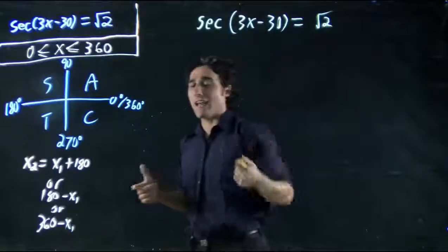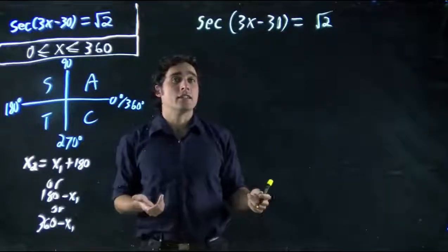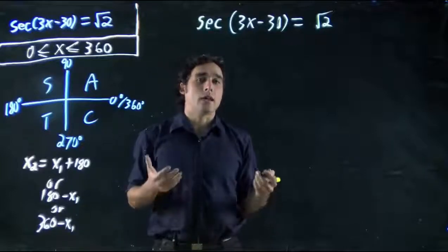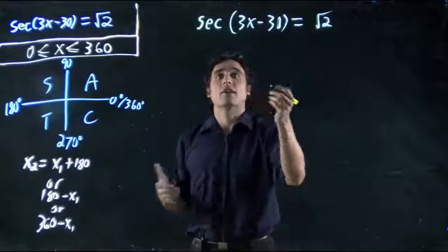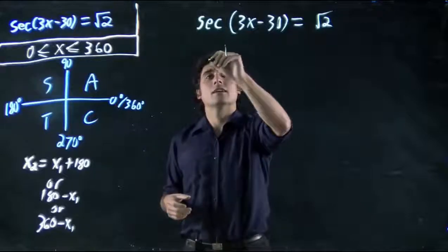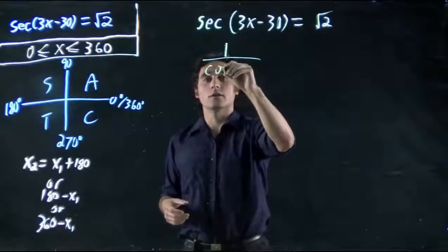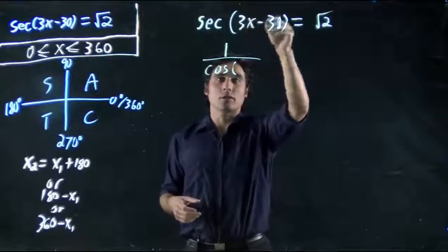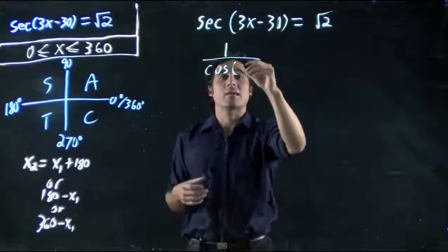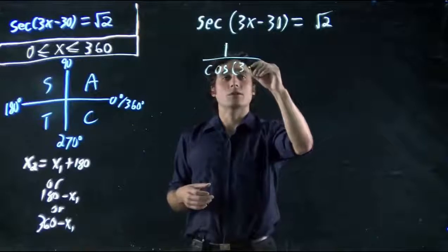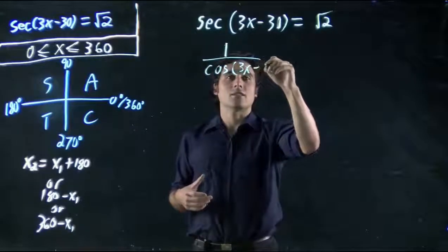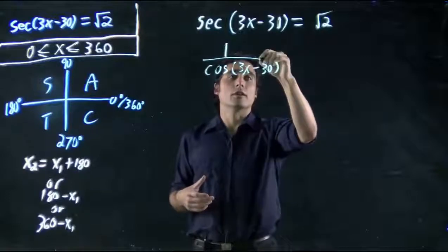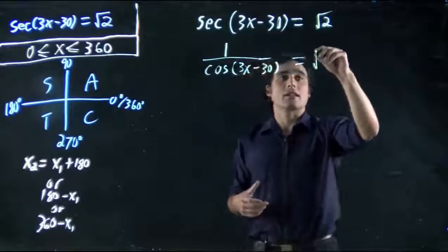Well, you don't likely have a secant button on your calculator. So what do we have to do? We have to convert it into something we know. Secant is related to cos. In fact, we can rewrite this whole thing as 1 over cos of the same term. It remains the same. So secant becomes cos, it just gets flipped. It becomes 1 over. And that's still equal to square root 2.